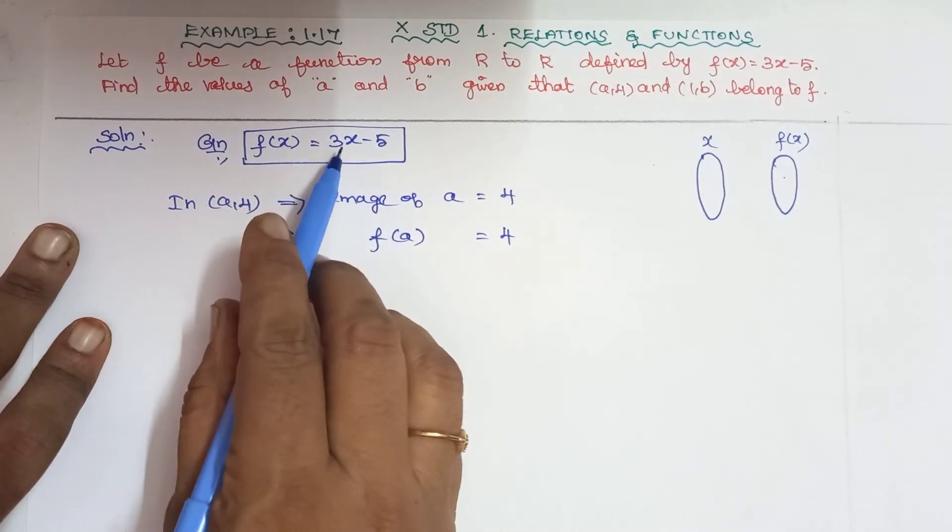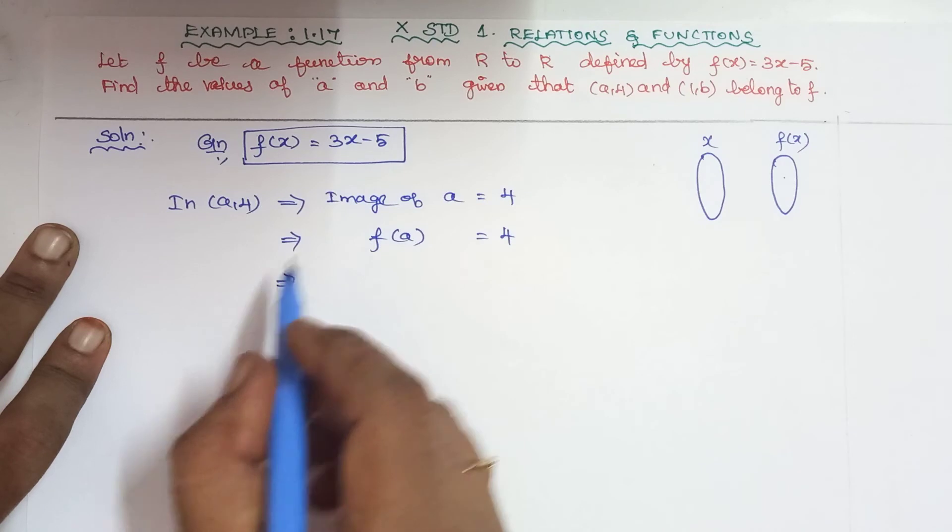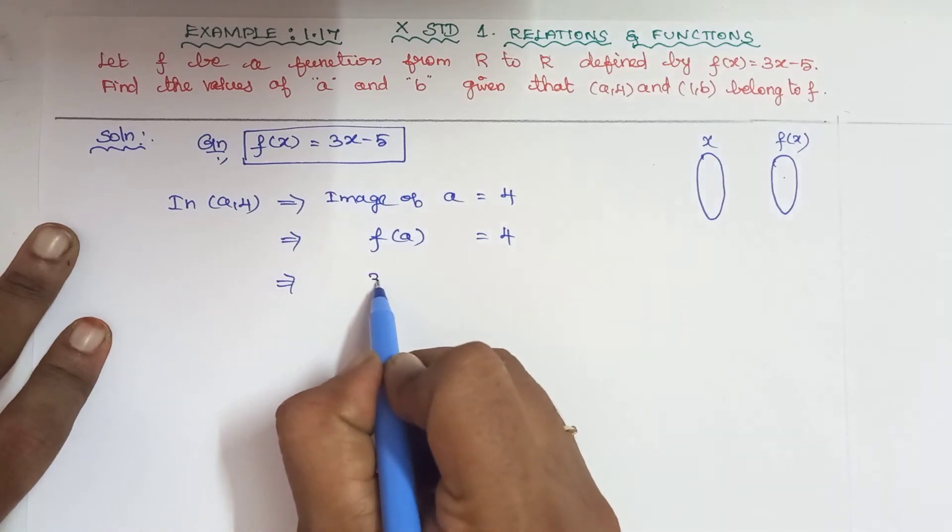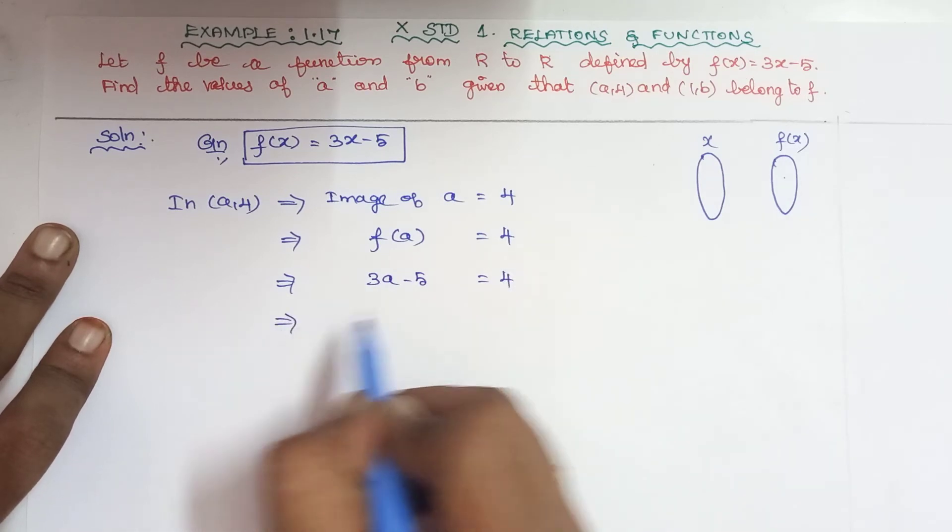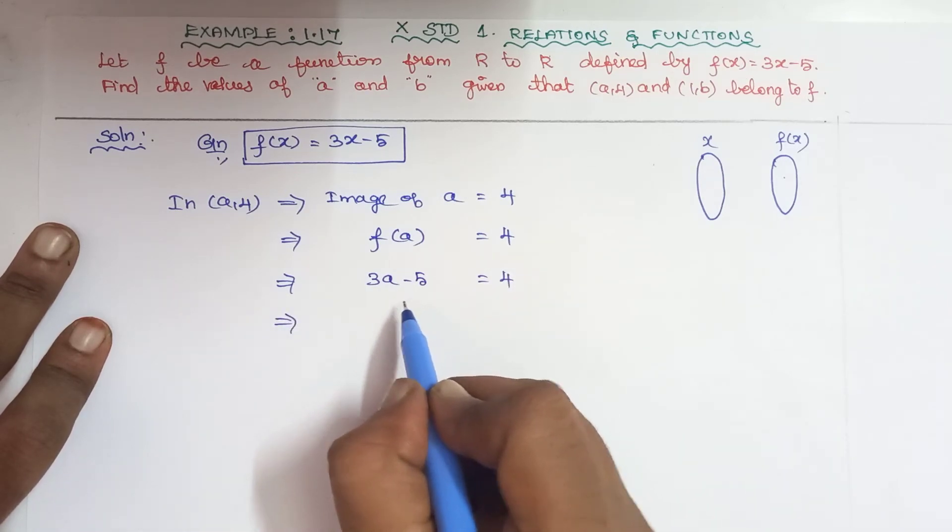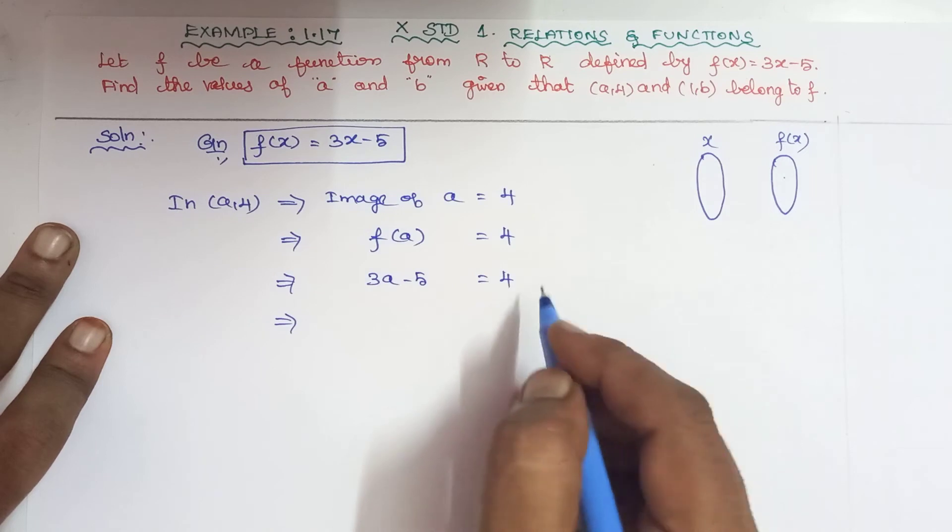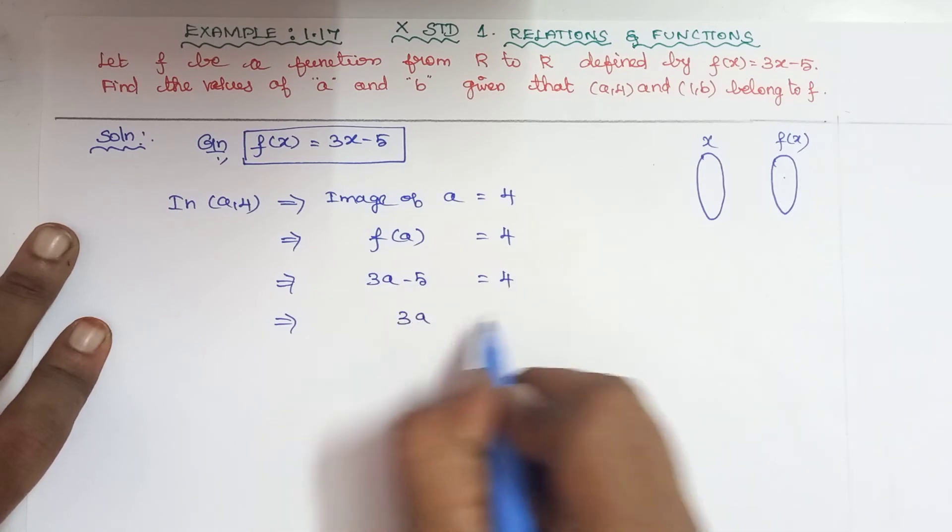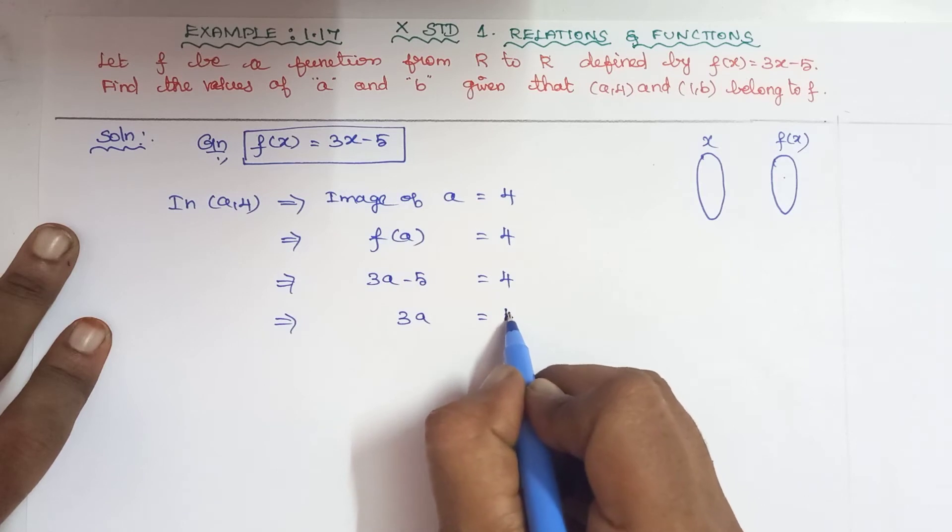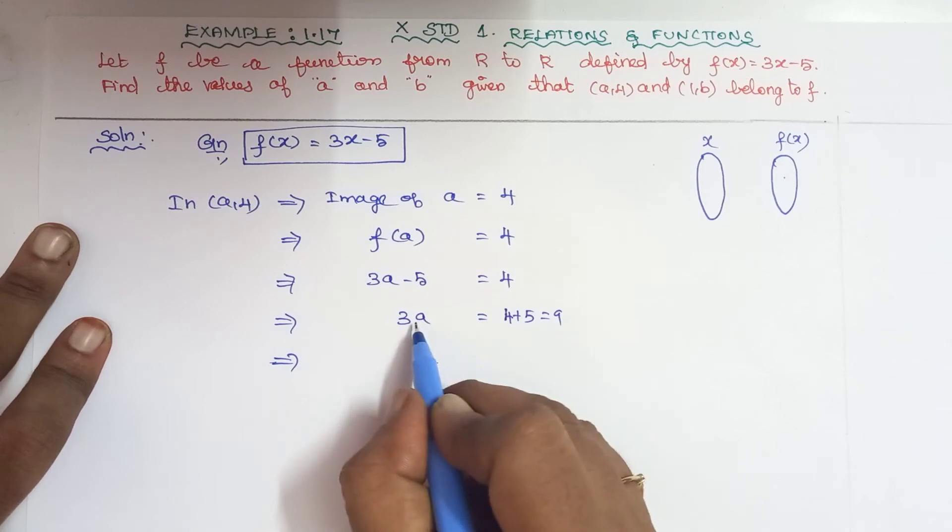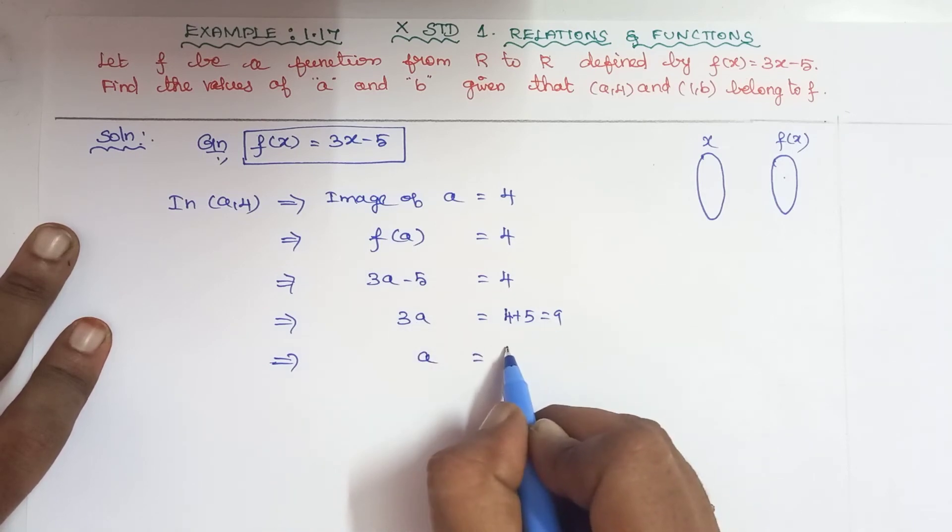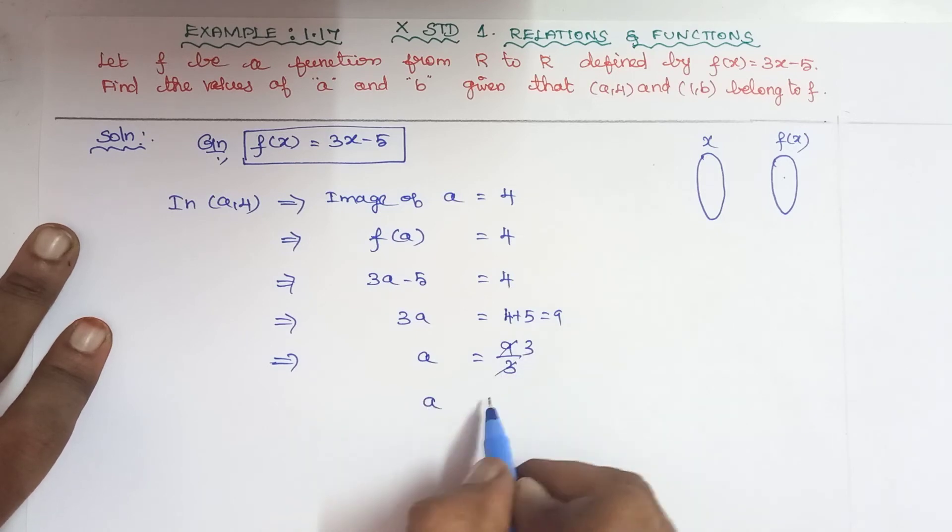So we get 3a - 5 = 4. This becomes 3a = 9.